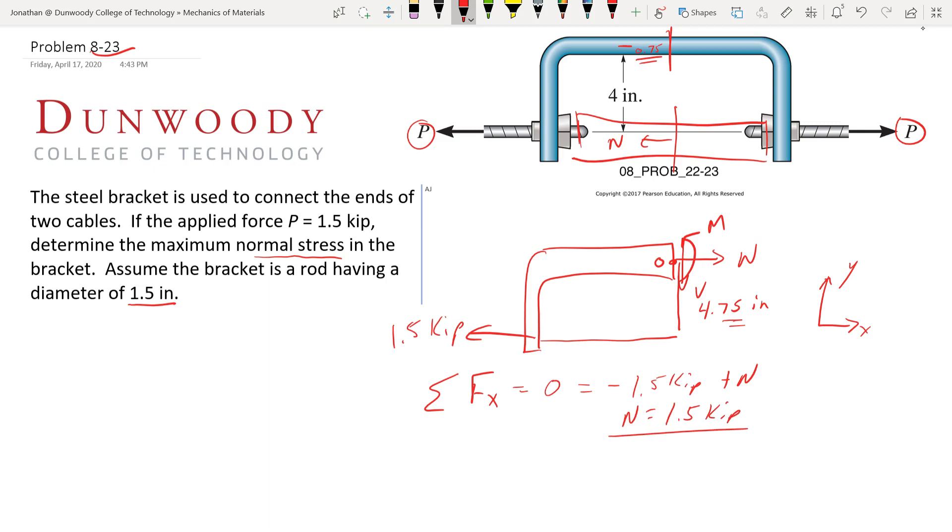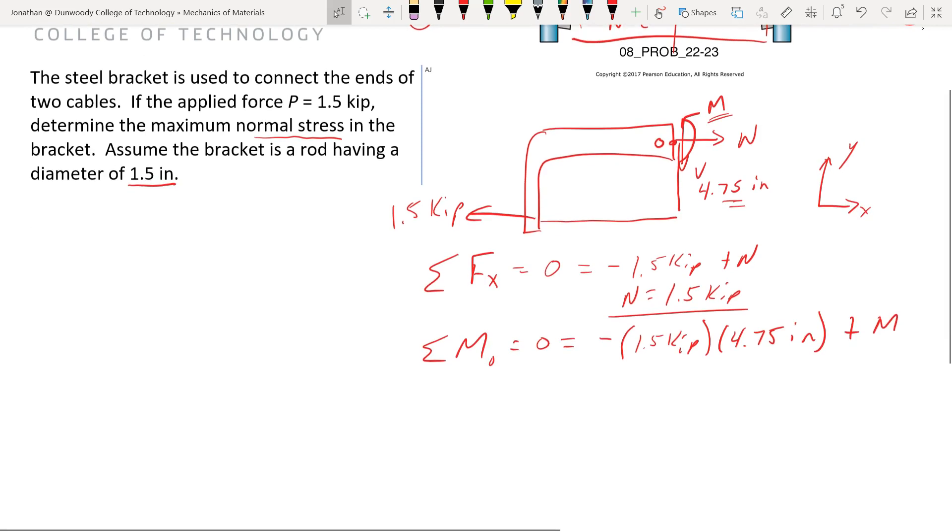Alright, and then we also define M. Sum of our moments around O is going to be 0. So what do we have there? This guy, with a 4.75 inch moment arm, is creating a positive moment. Sorry, negative moment, rotating clockwise. So we have negative 1.5 kip times 4.75 inches. And then we have a positive. Sorry, I think I told you before that was a negative moment when we add up our equations of equilibrium, it's actually a positive moment. So we have plus M. So we do this M, moving to the other side. This part to the other side, we get, what is that? 1.5 times 4.75. We find 7.125 kip inches.